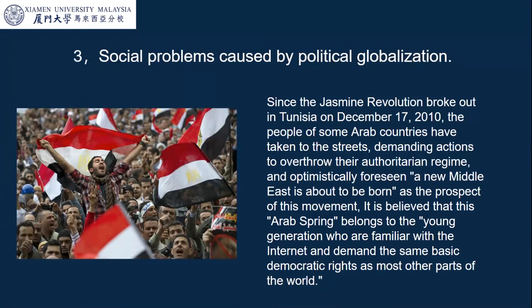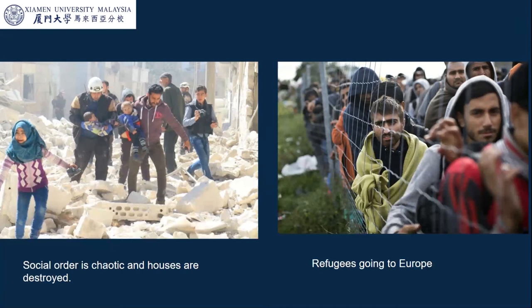The third dilemma is the social problems caused by political globalization. Since the Jasmine Revolution broke out on December 17th, 2010, the people of some Arab countries took to the streets demanding the overthrow of their governments. Optimistically, the Middle East seemed about to experience a new prospect. At that time, the Western media claimed to bring democracy and freedom to Arab countries. However, now we can say that there has been war in society — houses destroyed, social order chaotic, and people forced to leave their country.